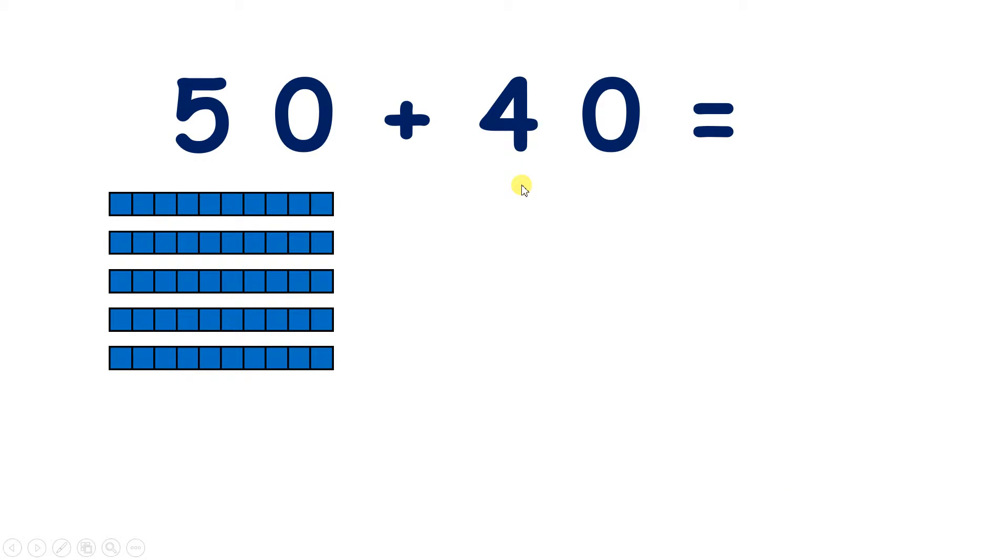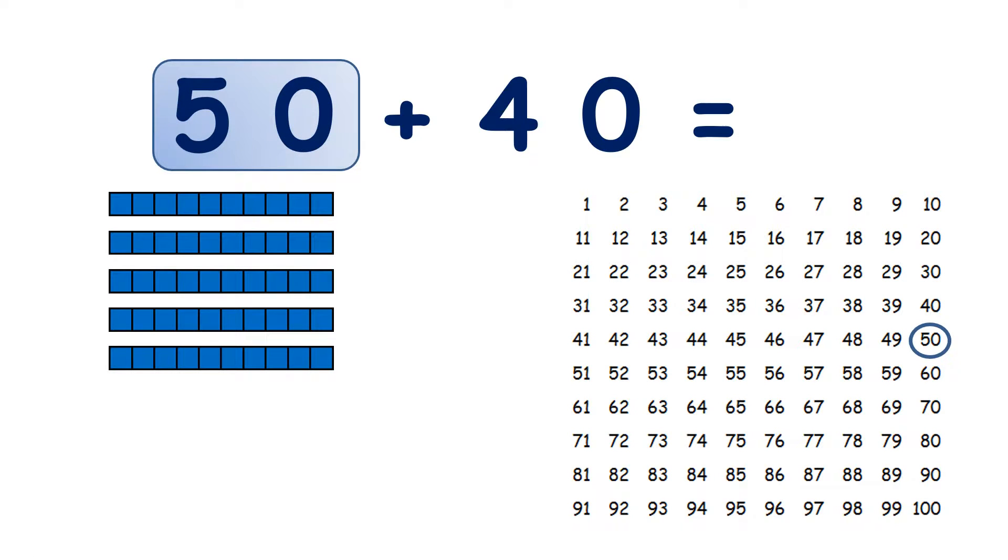Now we have 50 add 40. So I can find 50 on my 100 square. And if I want to add 40, I know that 40 is 4 tens.